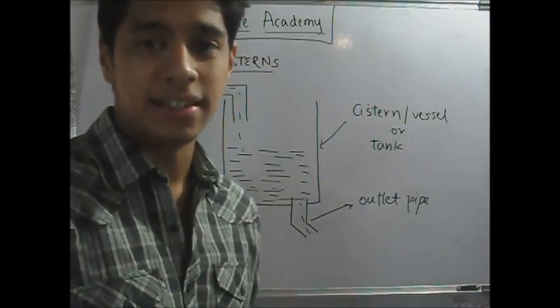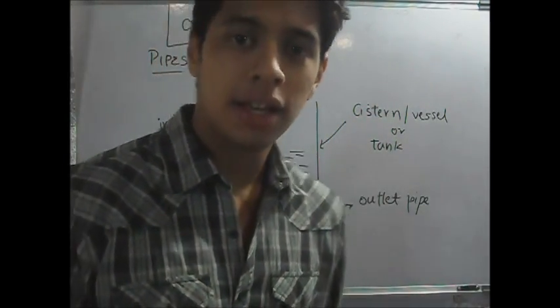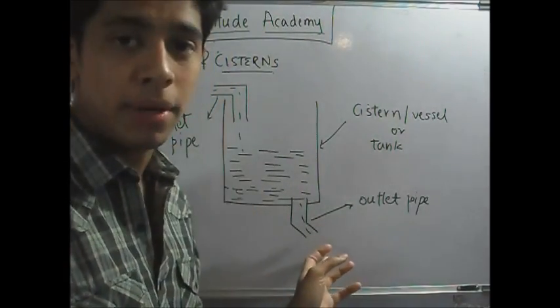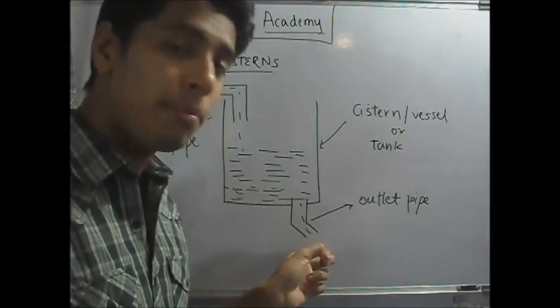This is known as a cistern or a tank. It's also called a vessel in some problems. You have two types of pipes. You have an inlet pipe and you have an outlet pipe. As the name suggests, an inlet pipe fills a tank. An outlet pipe empties it.